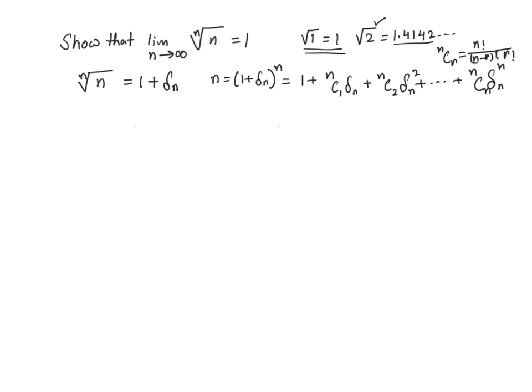Now, for n greater than or equal to 2, we can safely make the following assumption: n is going to be greater than nc2 delta sub n square. Now, why is that going to be the case? Look, all these terms on the right in this equation, all these delta sub ns are actually positive numbers.